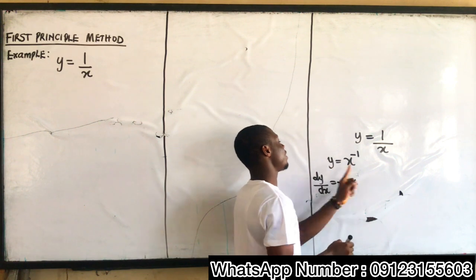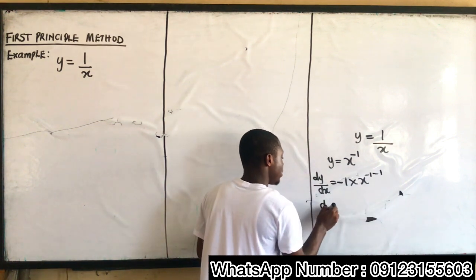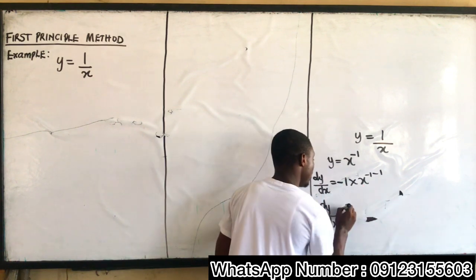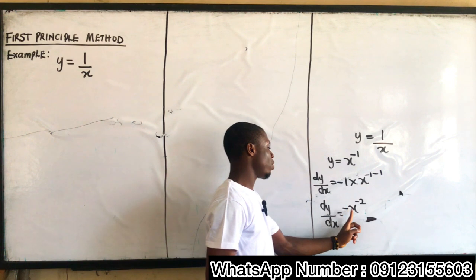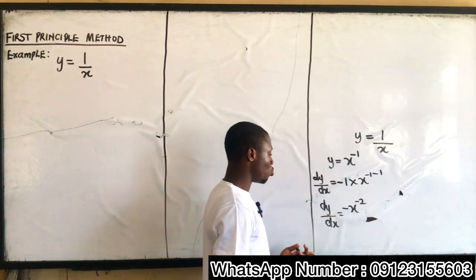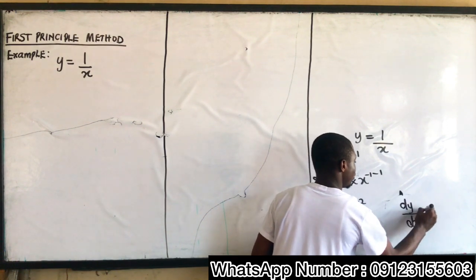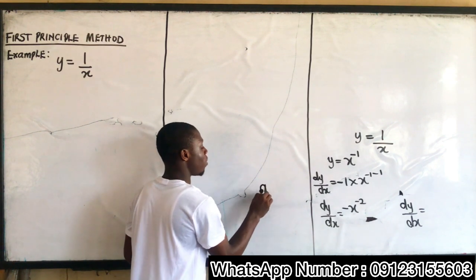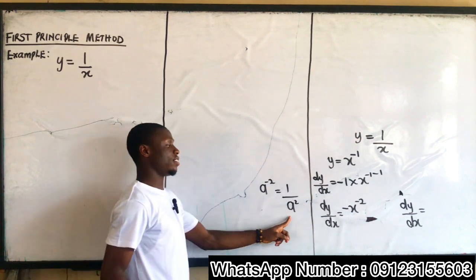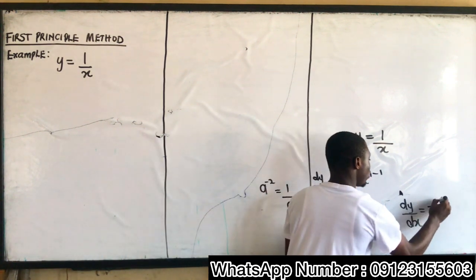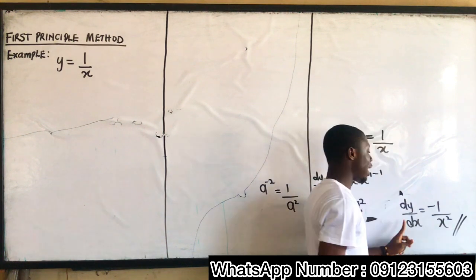The power is negative 1. I multiply out by the power — negative 1 — then subtract 1 from the power. So dy/dx is equal to negative 1 times x to the power of negative 1 minus 1, which gives negative x to the power of negative 2. Applying the concept of indices, x to the power of negative 2 becomes 1 over x squared, so dy/dx is equal to negative 1 over x squared. That is our answer using the general method.